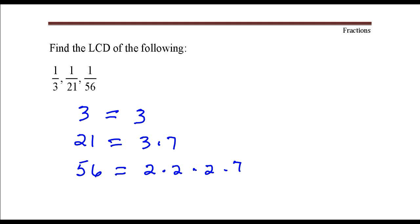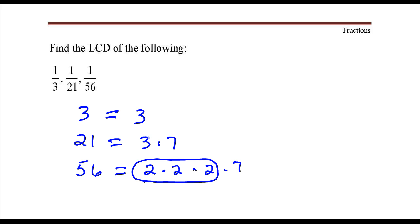Next, I want to circle the greatest number of times that a 2 occurs in any one of these factorizations. A 2 occurs here — it occurs three times. The greatest number of times that a 3 occurs is once, just right here. It occurs once here or here, but just circle one of these threes, not both. And then the greatest number of times that a 7 occurs is just once also — it occurs here or here. Just circle one of these sevens, not both.